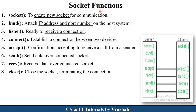The next point is socket functions. Socket programming is very popular in computer networks, and Java programming is generally used to execute socket functions. There are different socket functions used for performing communication between a client and a server. The first is the socket function, which is used to create a new socket for communication. Next is the bind function, which attaches the IP address and port number of a particular host system — for example, port number 69 for file transfer or port number 25 for email. Next is the listen function, which makes the server ready to receive a connection from the client.